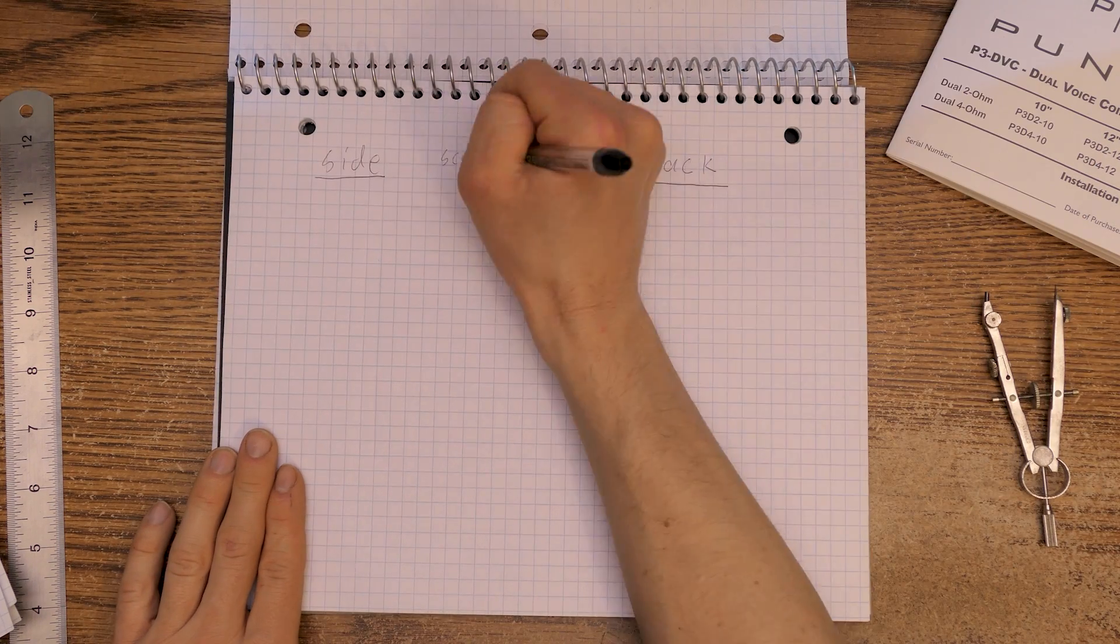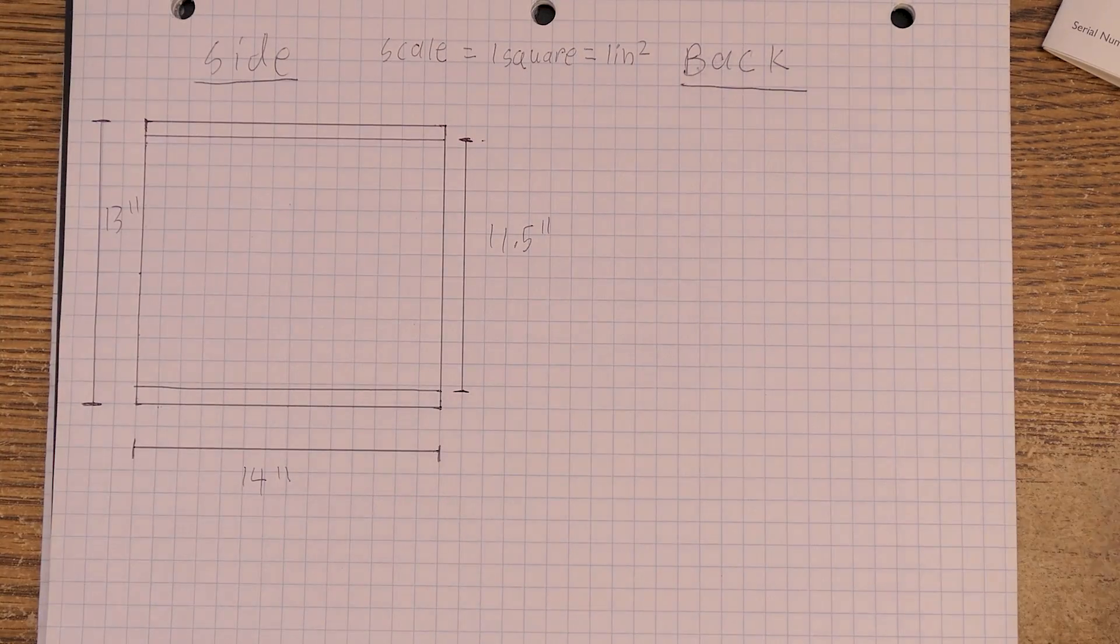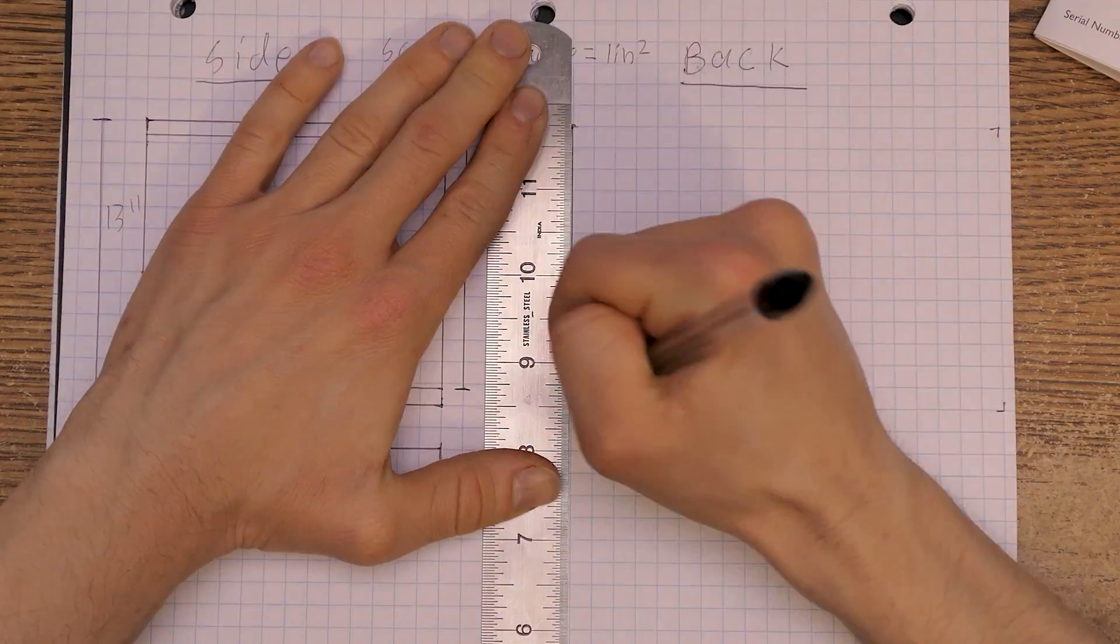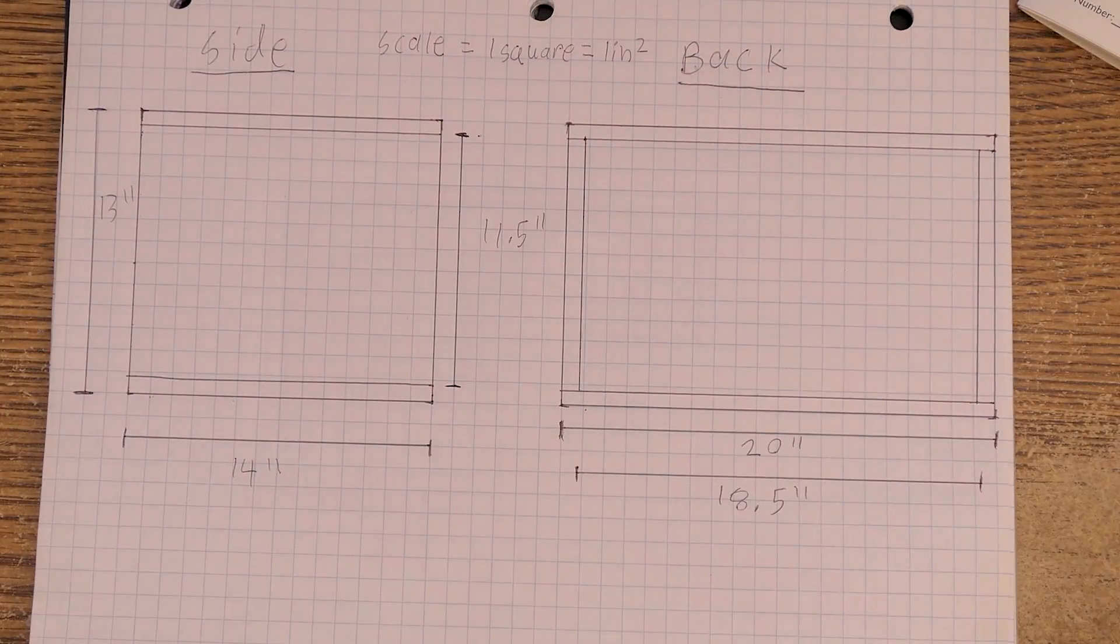Moving on to the next page, I will be drawing the sides and the back. The sides extend all the way left to right, but the top will overlap them. Then, the back will be similar to the front, minus the port, and again, I will be making measurement lines for these as well.